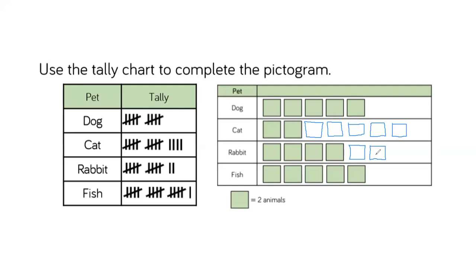Before you have a go at completing your pictogram from your tally chart, let's have a look at the last row. Fish: five, ten, fifteen, sixteen. In my fish pictogram already, I have two, four, six, eight, ten. Let's count together: twelve, fourteen, sixteen. There, I have completed my pictogram. To check your pictogram is correct, you can count the tally lines and then count the number in your pictogram again.